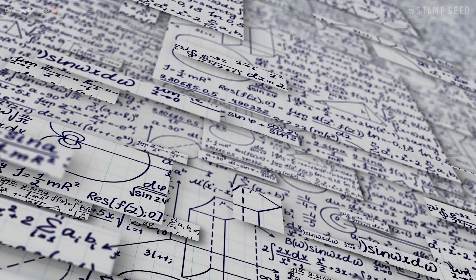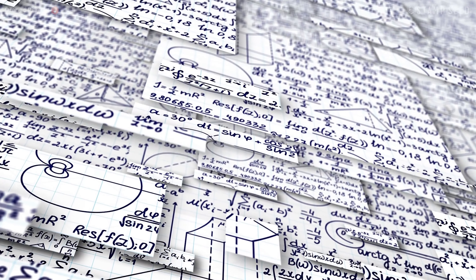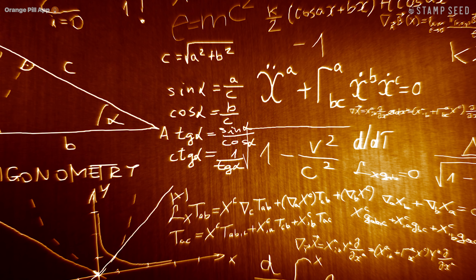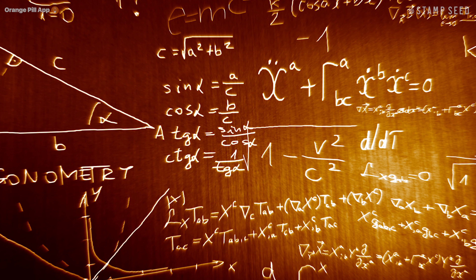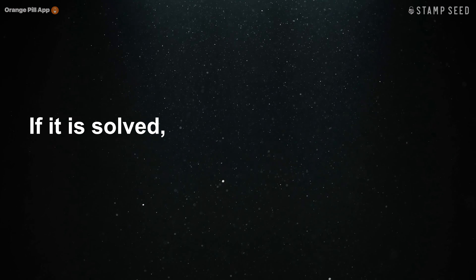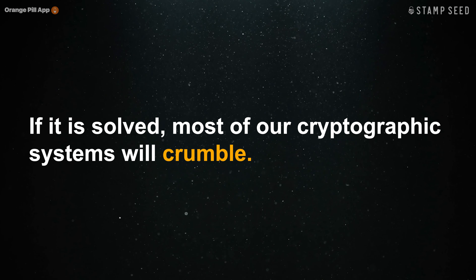So if you choose a large enough prime number, division is practically impossible to do when attempting to reverse point multiplication. And this is the discrete log problem and is the basis of modern cryptography. If it is solved, most of our cryptographic systems will crumble.